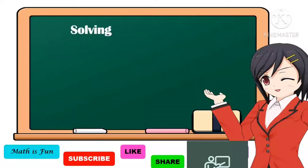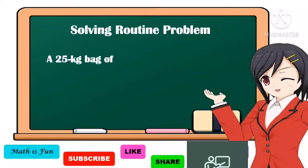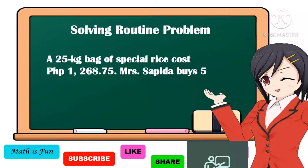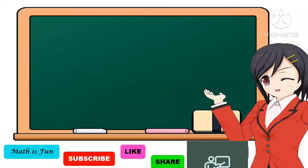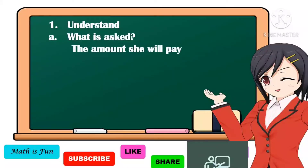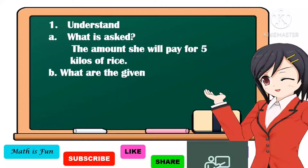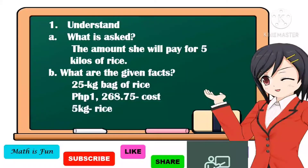Our first problem is a routine problem. A 25-kilogram bag of special rice costs 1,268 pesos and 75 centavos. Mrs. Zapida buys 5 kilograms of this rice. How much will she pay? To solve our problem, first we're going to understand what is asked — it is asking for the amount she will pay for 5 kilos of rice. The given facts are: a 25-kilogram bag of rice, 1,268 pesos and 75 centavos as the cost of 25 kilograms of rice, and 5 kilograms of rice.